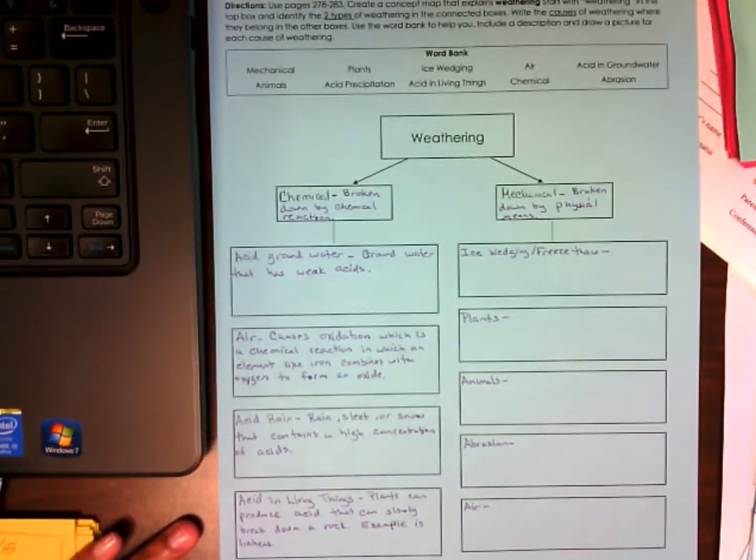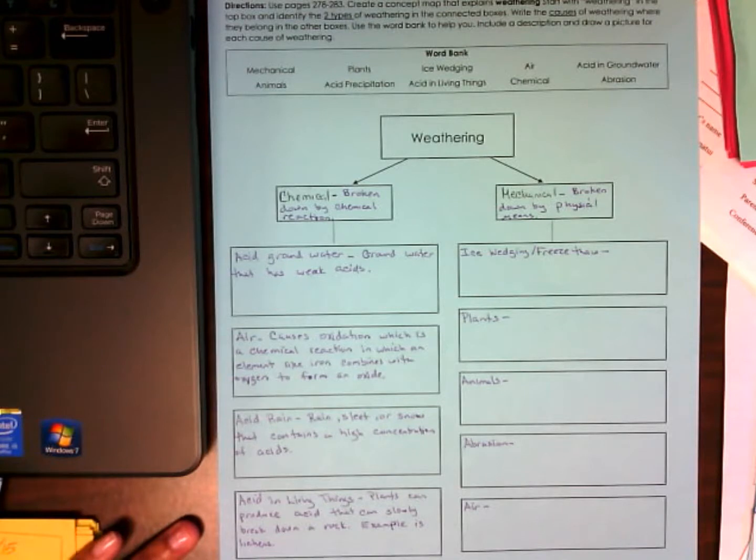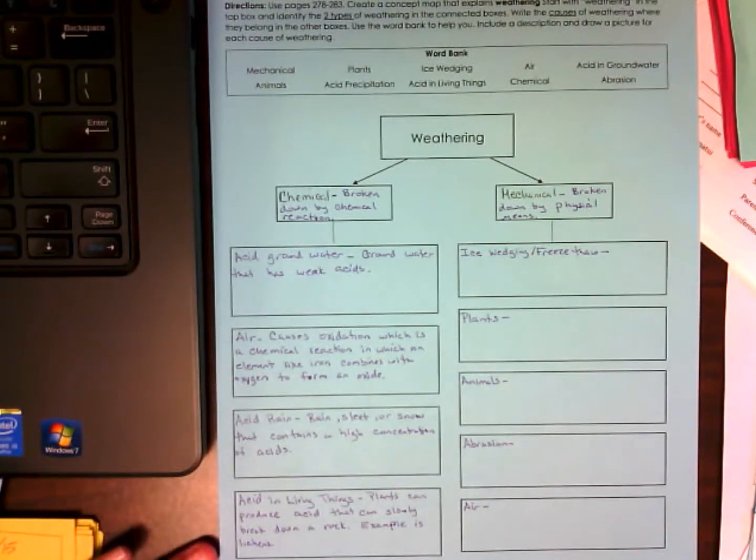So then under mechanical we have ice wedging and freeze thaw. What exactly is ice wedging or freeze thaw? Paula. When water turns into the cracks of a rock, then the water turns into ice and it's standing in the rock. Very good. So you have water that gets in between the cracks. They get into these cracks and once the water gets into the cracks they actually freeze. When it freezes, it expands. So eventually it breaks the rock apart. And this is a repetitive motion that will keep happening.